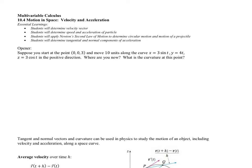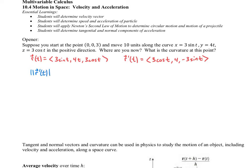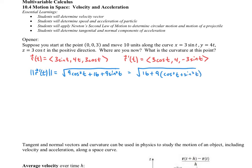We're just going to do the change of parameters and change the function from T to arc length. Our first step is that we have our vector function, which is <3 sine of T, 4T, 3 cosine T>. The derivative is <3 cosine T, 4, negative 3 sine T>. The magnitude of r prime of T is the square root of 9 cosine squared T plus 16 plus 9 sine squared T. Factoring out 9 from the trig functions gives cosine squared plus sine squared, which equals 1, so we have the square root of 16 plus 9, which is the square root of 25, which is 5.